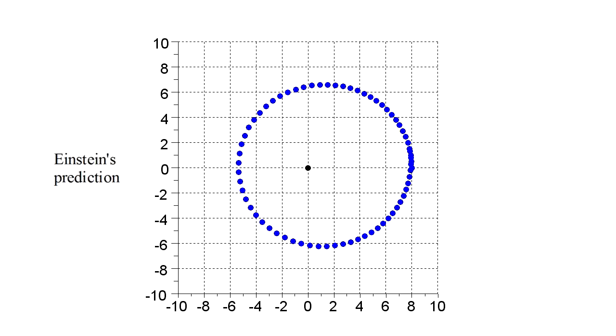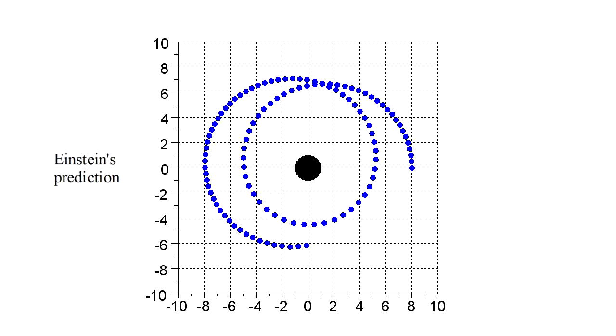Einstein's theory predicts the particle will follow a path that resembles an ellipse that doesn't quite close on itself, but instead precesses or rotates through time. The orbit shown here is for the same initial position and velocity as we saw in the Newtonian case. If we make the attracting mass much larger, this effect becomes very pronounced.